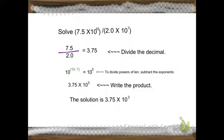Now, we're going to solve a division problem. 7.5 times 10 to the 10th power divided by 2 times 10 to the 7th power. This problem is different from the multiplication, but similar. First of all, we divide 7.5 over 2, so it equals 3.75.